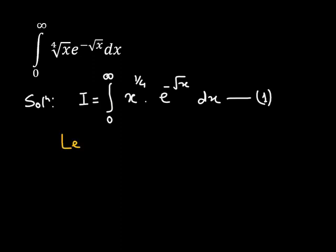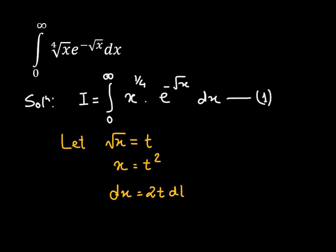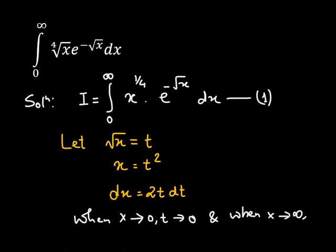We are going to make a substitution: square root of x is equal to t, such that x is equal to t squared, and differentiating both sides gives us dx is equal to 2t dt. We also need to change the limits: when x approaches 0, t approaches 0, and when x approaches infinity, t also approaches infinity.